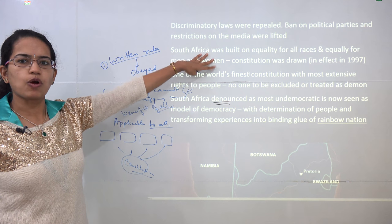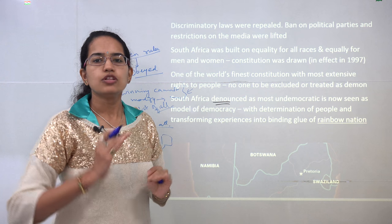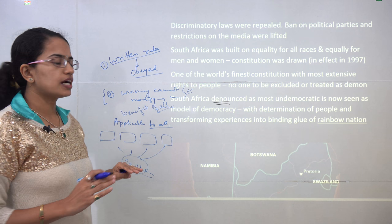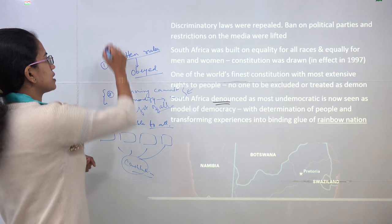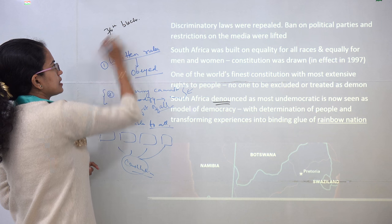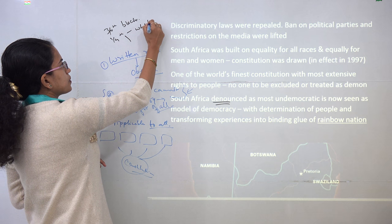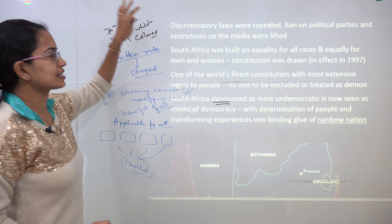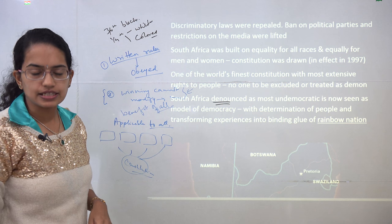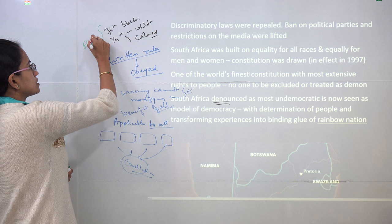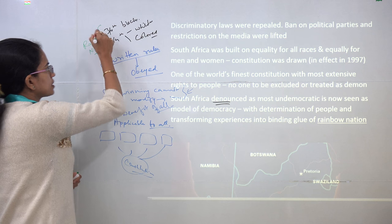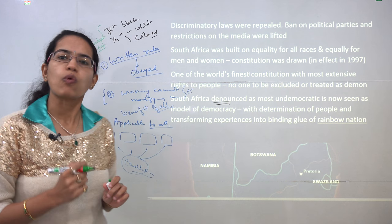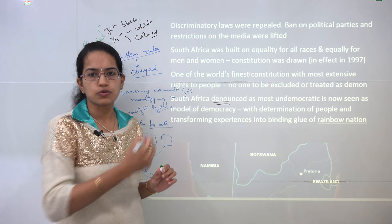No one should be excluded from the ideas of the South African constitution — no one would be considered inferior, and everyone would be at an equal stake. South Africa is a mixed culture with three-fourths blacks, and of the remaining one-fourth, two races: white Europeans and the colored or mixed race, mainly Indians. Therefore South Africa is also known as the rainbow nation. This is an important term — questions may ask about the framing of the constitution in the rainbow nation, so you must know what it means.